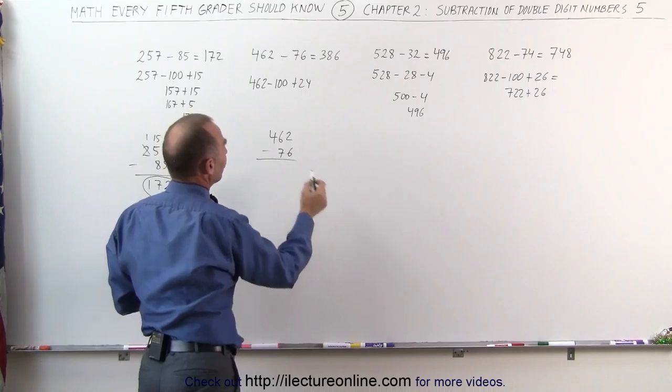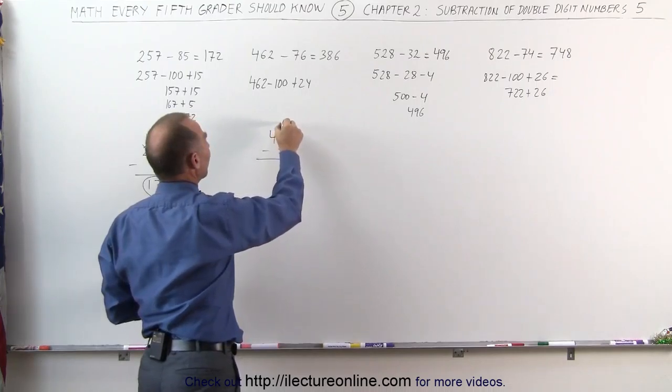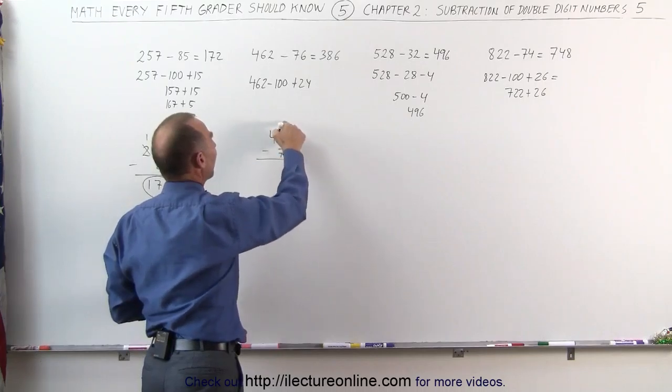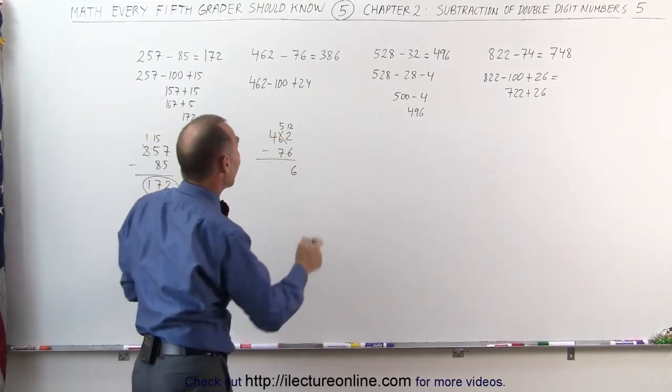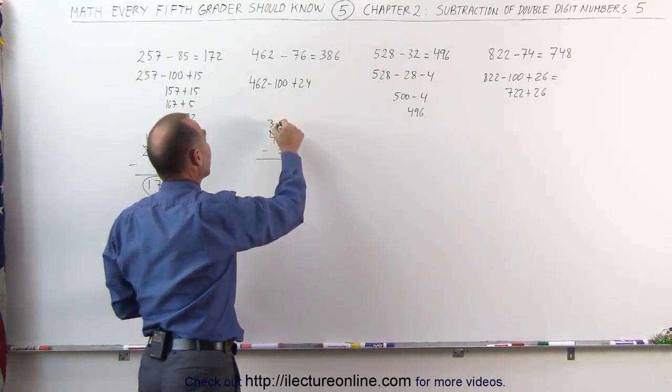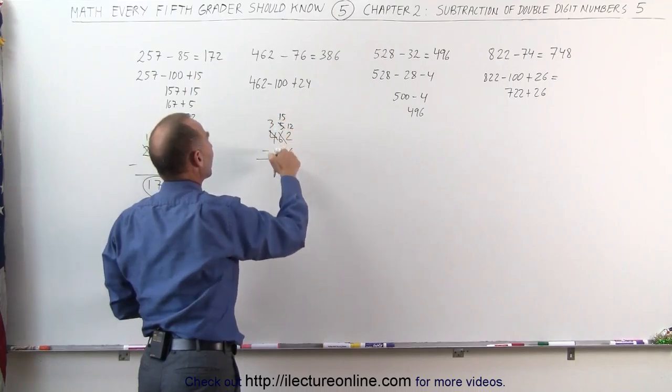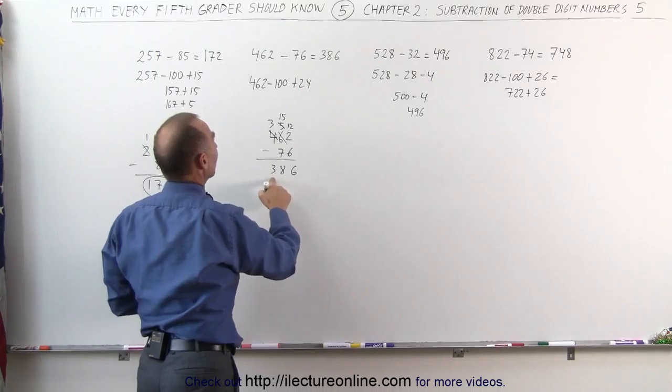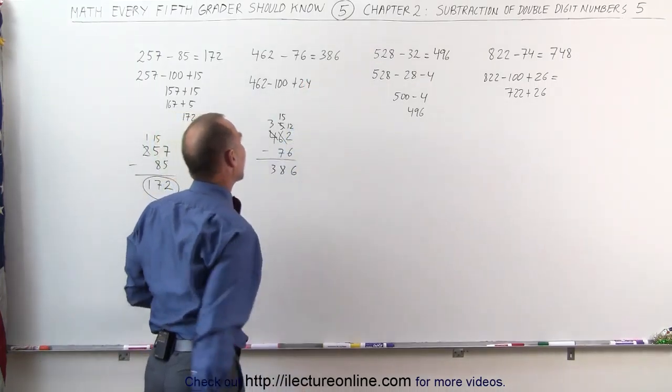2 minus 6, I can't do that, I have to go borrow 1, this becomes a 5, this becomes 12. 12 minus 6 gives me 6. 5 minus 7, can't do that, I have to go borrow 1, this becomes 3, this becomes 15. 15 minus 7, that gives me 8. 3 minus 0 is 3. 386 is the answer that I was looking for.